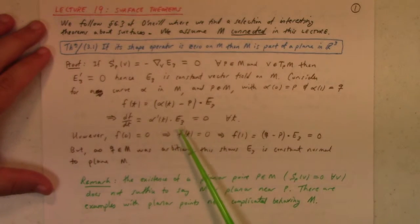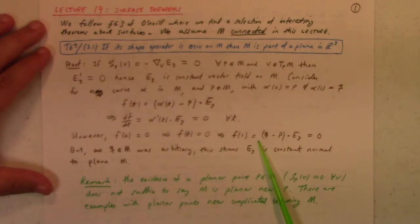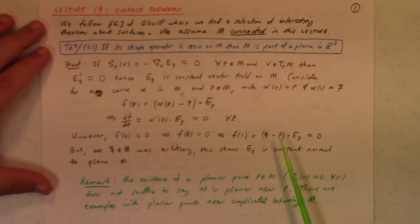And since that's true for each t, that means that df dt is equal to zero for all t. However, so f is constant. However, f of zero is zero, which means that f of t is zero for all t. In particular, f of one is equal to zero, but that shows that q minus p dot e3 is equal to zero, which shows you that the displacement between points in the surface is perpendicular to e3, which means that the surface is a plane or part of a plane.